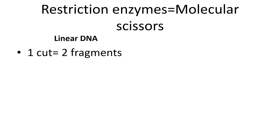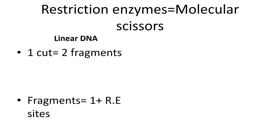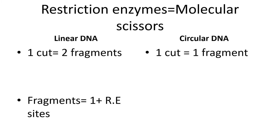Restriction enzymes can be imagined as molecular scissors — they make cuts at very specific sites. We can relate the linear rope with linear DNA, wherein one cut gives two fragments. So to generalize: on a linear DNA, the number of fragments generated will always be one plus the number of restriction enzyme sites. In the case of circular DNA, one cut gives one fragment, so the total number of fragments generated will be equal to the number of restriction enzyme sites.